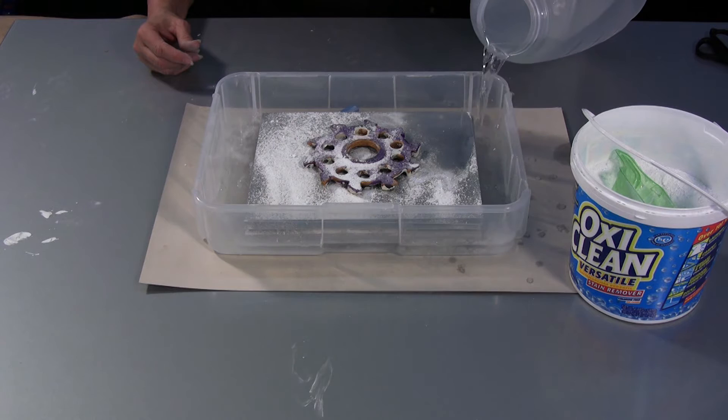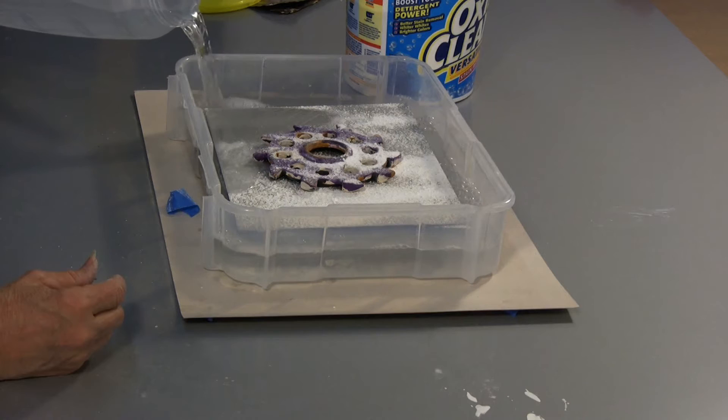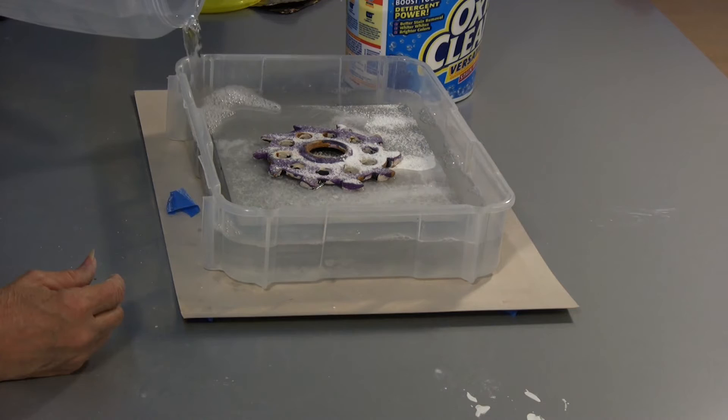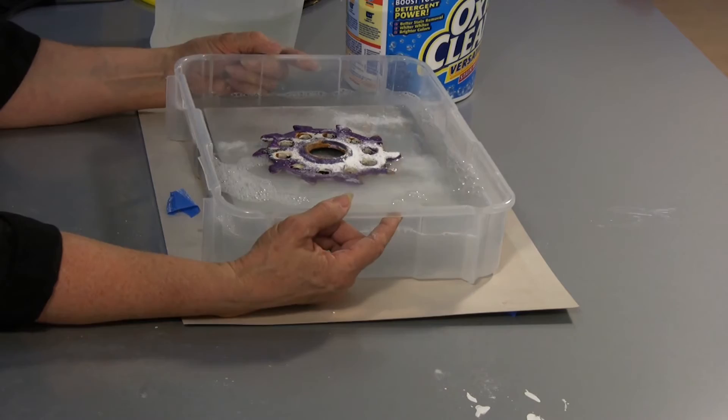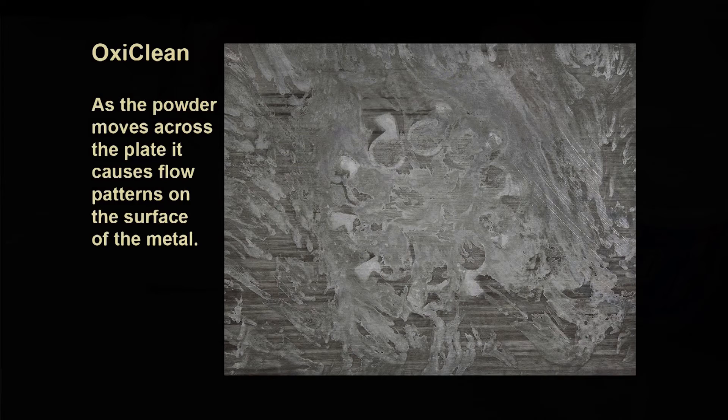Now you pour in water. And you pour in just enough so that the stack of metal is covered in water. You don't need to have a lot over the top, just maybe a half an inch. And then I like to just take it and kind of tip it a little bit and get the OxyClean to flow across the surfaces.